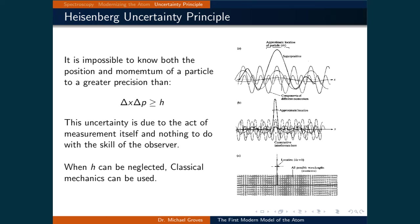As we will see later, the uncertainty principle will fall out naturally from our analysis of quantum mechanics. The following two examples demonstrate the numerical consequences of the uncertainty principle.